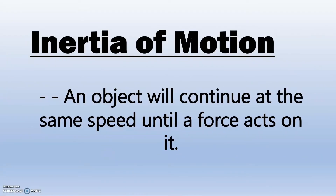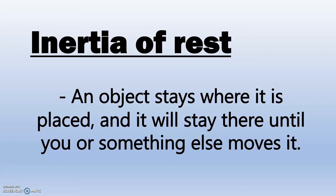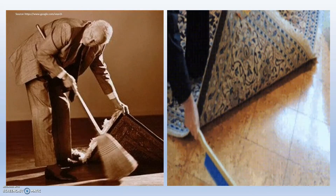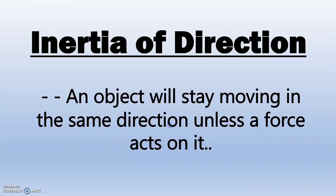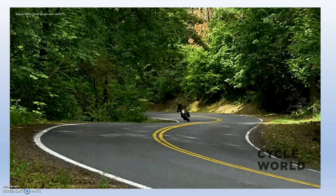Inertia of motion means that an object will continue at the same speed until a force acts on it. For example, a body going forward when a car stops. Inertia of rest means an object stays where it is placed and will stay there until you or something else moves it — for example, dust particles that stay at rest until you shake a carpet. Inertia of direction means an object will stay moving in the same direction unless a force acts on it — for example, one's body movement to the side when a car or motorcycle makes a sharp turn.